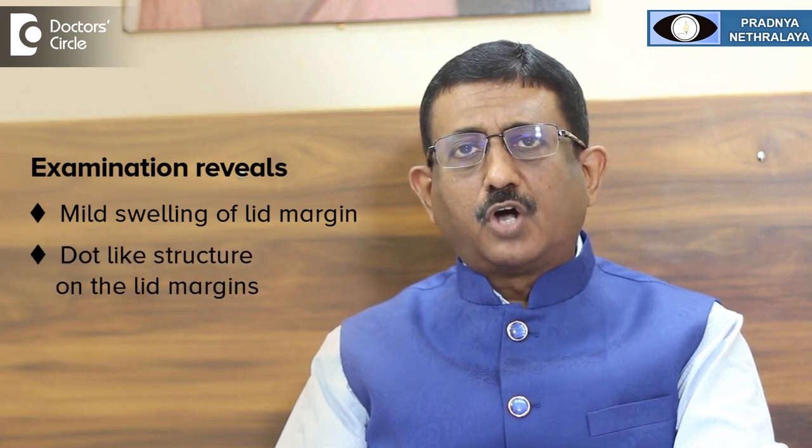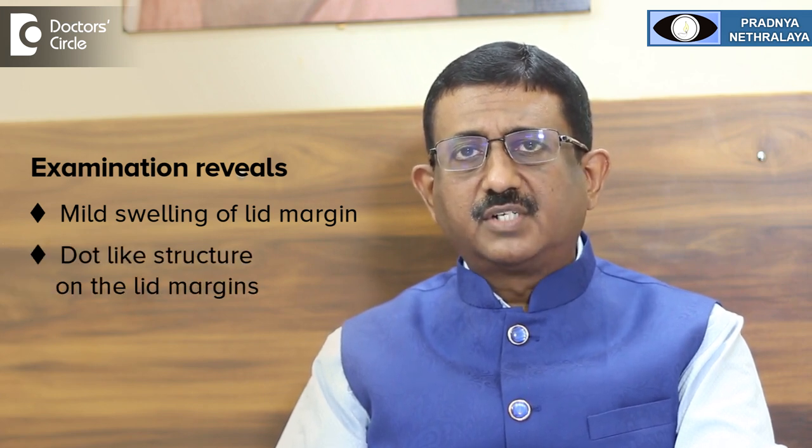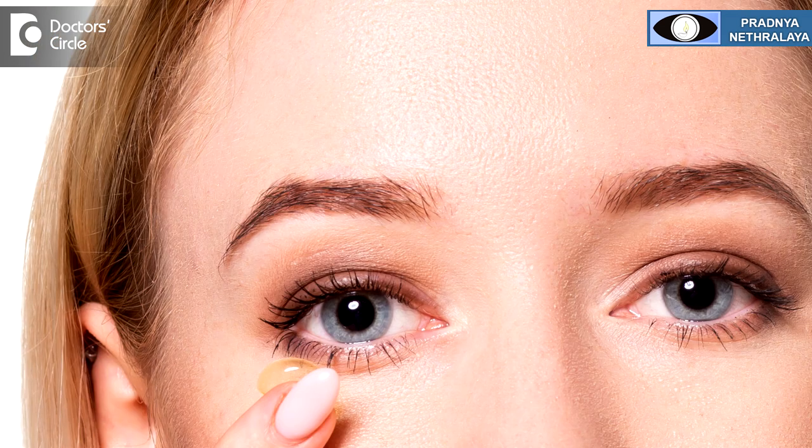On examination, one can see a mild swelling in the lid margins. One can see small dot-like structures on the lid margins, which is called capping or blockage of Meibomian Gland ducts. Clinical examination under slit-lamp biomicroscopy may give you an idea of Meibomian Gland Dysfunction. Ancillary tests like Meibography or Meibometer can help in clinching the diagnosis.